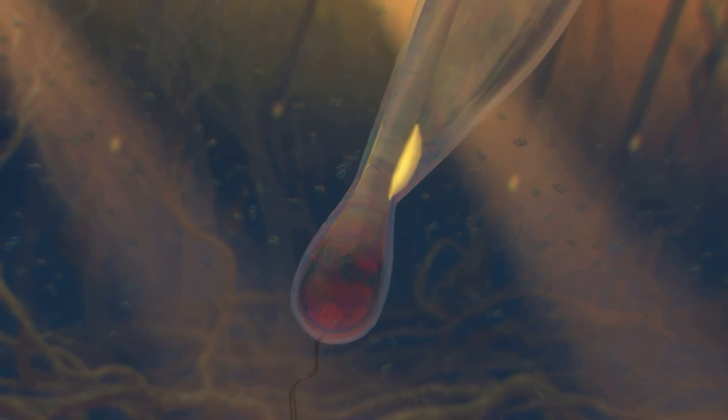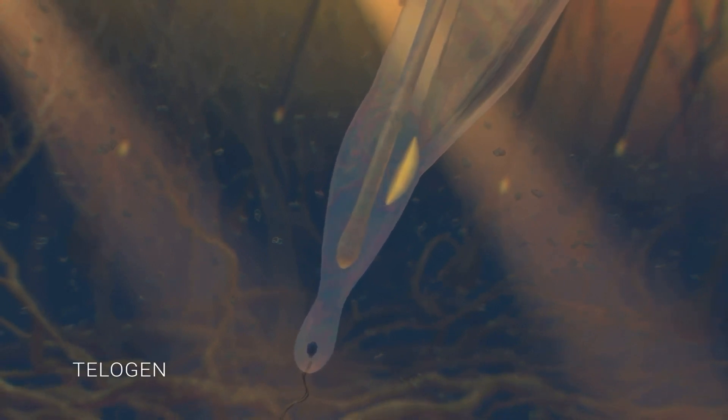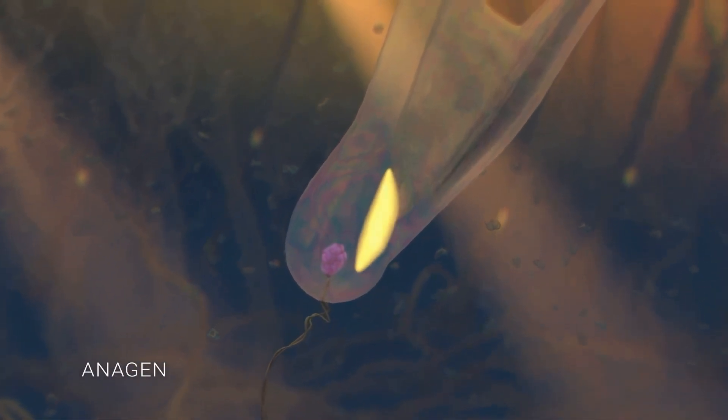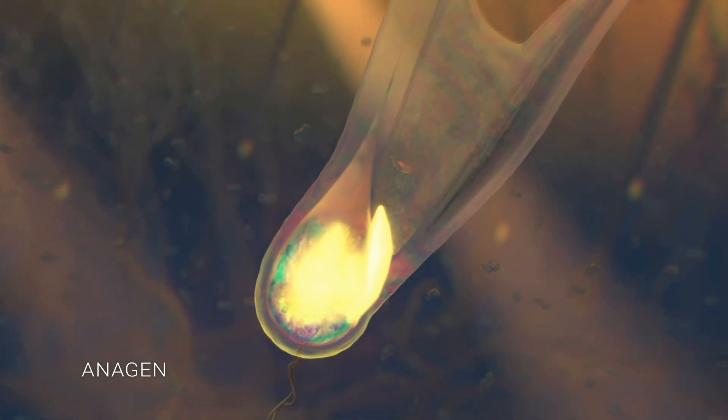The phase after anagen is catagen, when the papilla separates from the hair root bulb. Then the hair follicle lies dormant in telogen phase until the hair naturally sheds or is removed. During these phases, extraction causes no disruption to hair growth other than temporary removal.